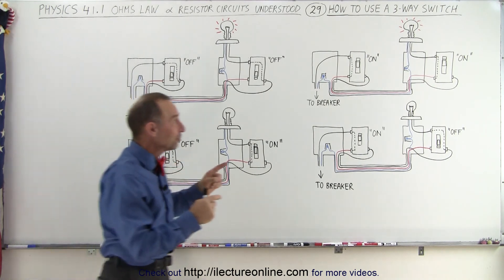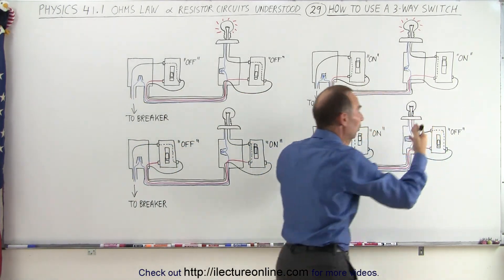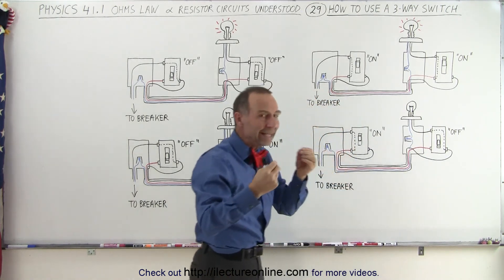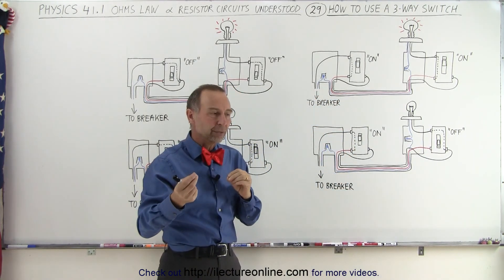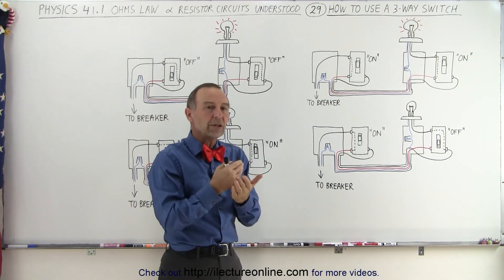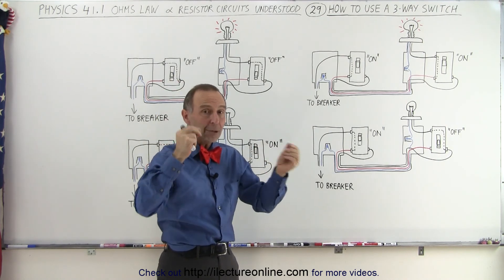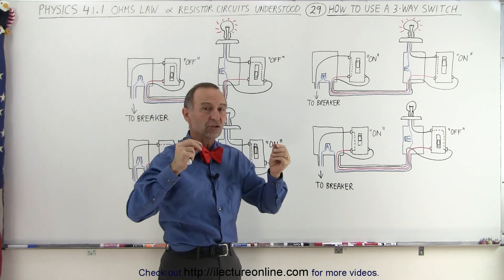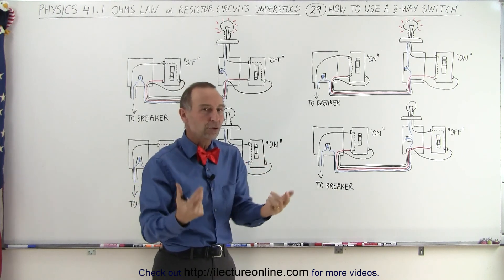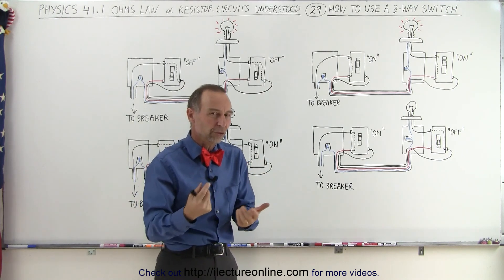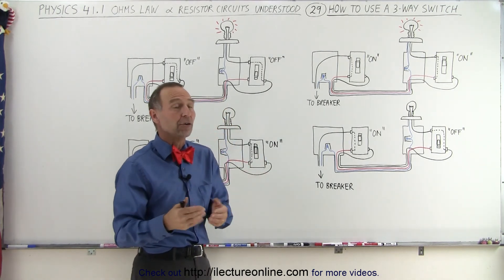Now if you have two switches, one on either end of the hallway, each one of them can be in an on or an off position. But you always want it such that if the light bulb is off, any one of the switches can always turn it on, and once it's turned on, any one of the two switches can always turn it back off again. So the way that works is as follows.